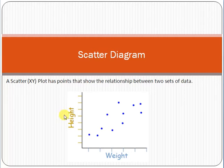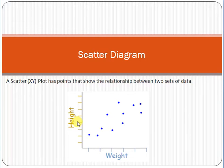Here is a very simple example of a scatter diagram. For example, a person having some height and a person having some weight — weight has some data and height has some data. Let's suppose you want to understand the trend or relationship. What you can do is sample, for example, five persons' weight and their height, and then try to make a relationship among their values — weight and height.